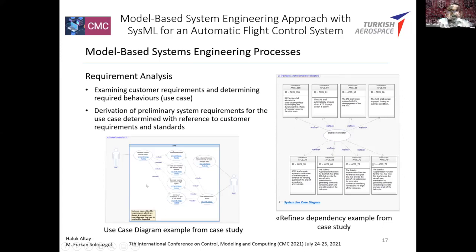The requirements analysis process is the first phase of the model-based systems engineering process. The input is customer requirements and the output is use case models of the system. The requirements analysis process includes: examining customer requirements and determining required behaviors; derivation of preliminary system requirements for use cases determined with reference to customer requirements and standards; and linking derived system requirements to customer requirements. A use case diagram example for the case study automatic flight control system includes use cases such as stabilize helicopter, attitude hold helicopter, and give feedback from sensors.